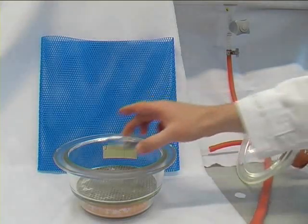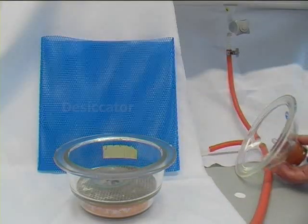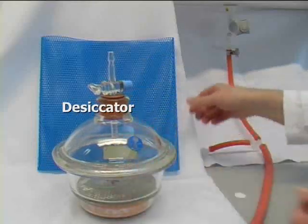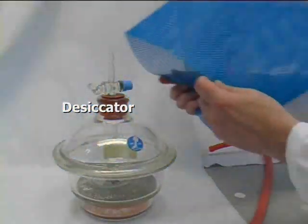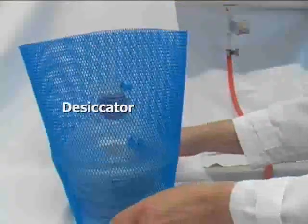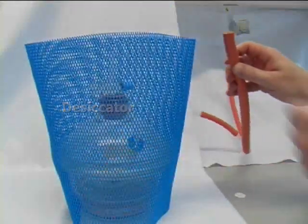So you put your substance into the desiccator, put on the lid tightly, and then you put the safety netting around to protect you from the hazard of a possible implosion.